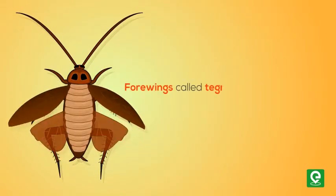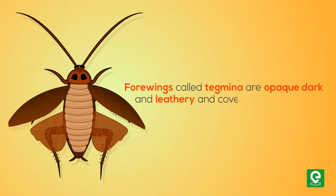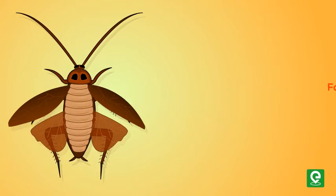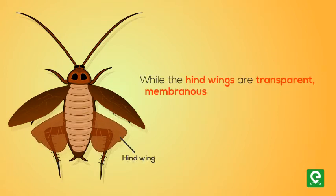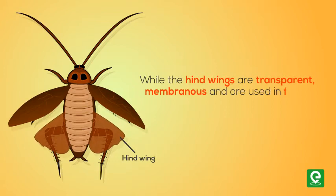The forewings, called tegmina, are opaque, dark, and leathery and cover the hind wings when at rest. The hind wings are transparent, membranous, and are used in flight.